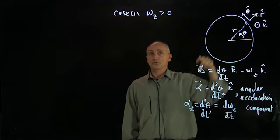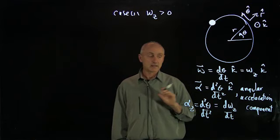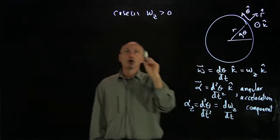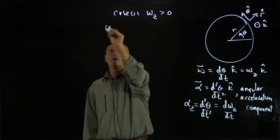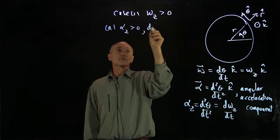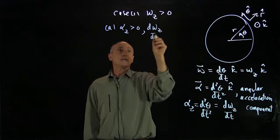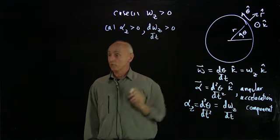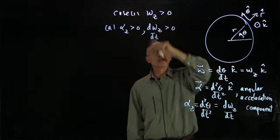Now, given that case, let's look at what happens when α_z is positive. Remember, that's the statement that dω/dt is positive, that ω_z is increasing. So if an object is moving with a positive component of ω_z, and the angular acceleration component is positive, that corresponds to increasing.